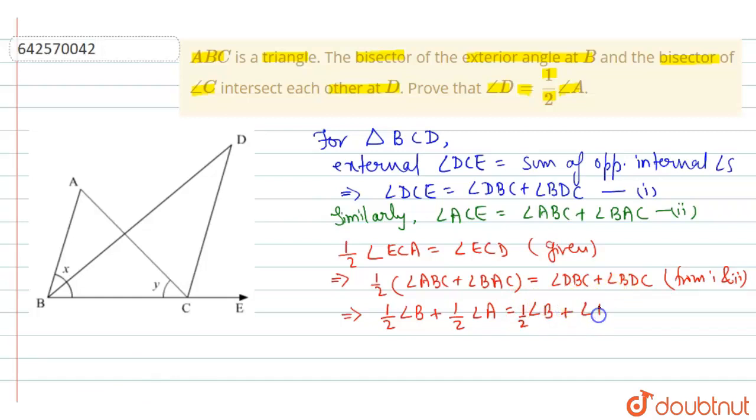So from left and right side half of angle B will be cancelled and we are left with half of angle A is equal to angle D, so we have proved.